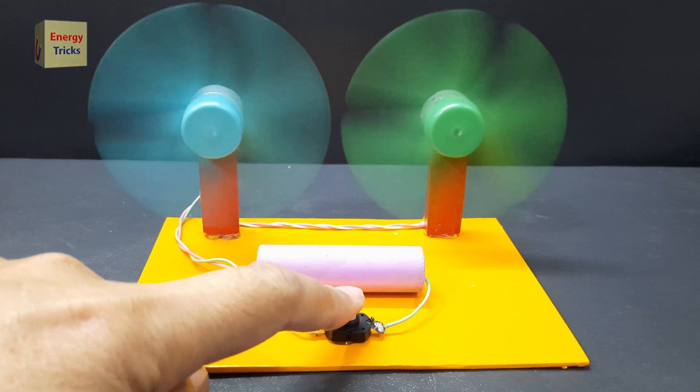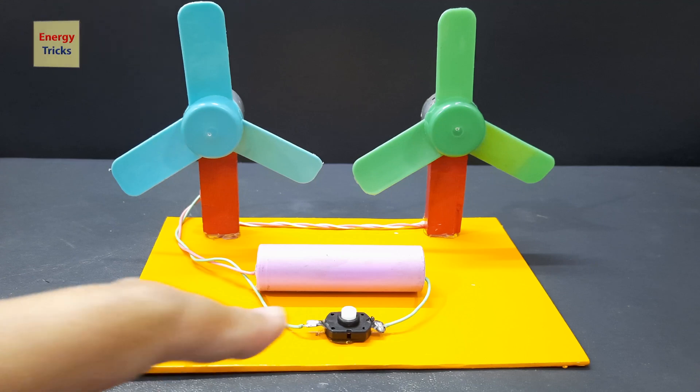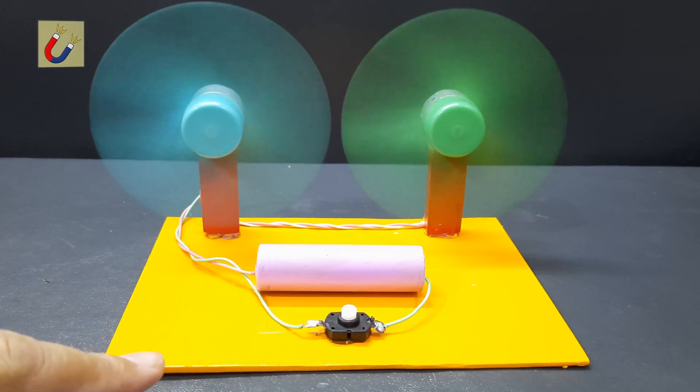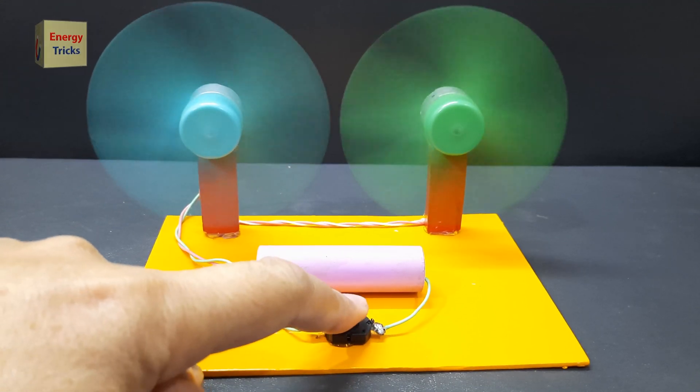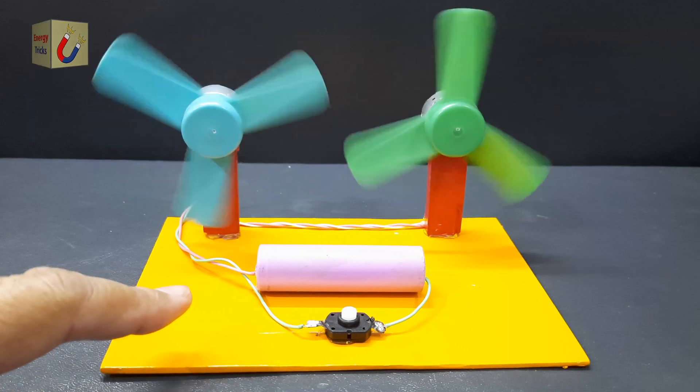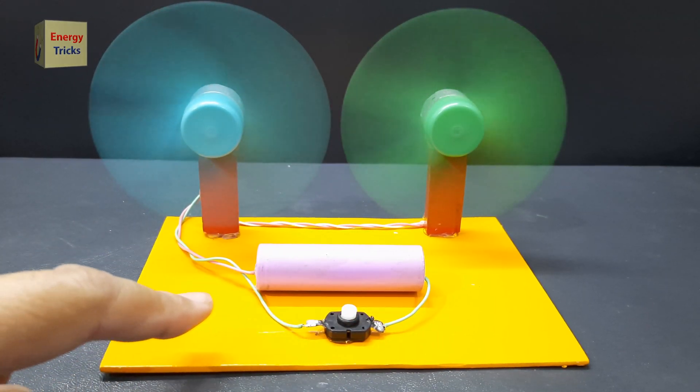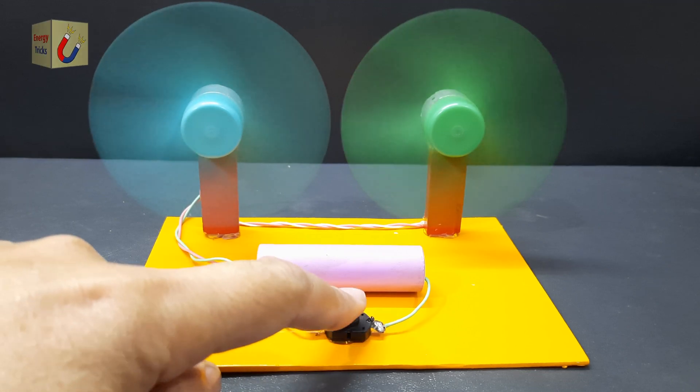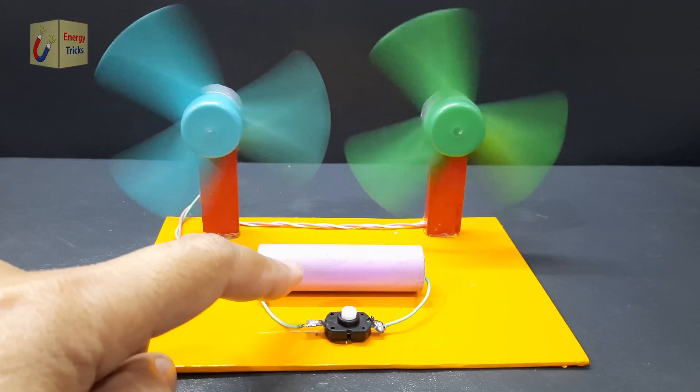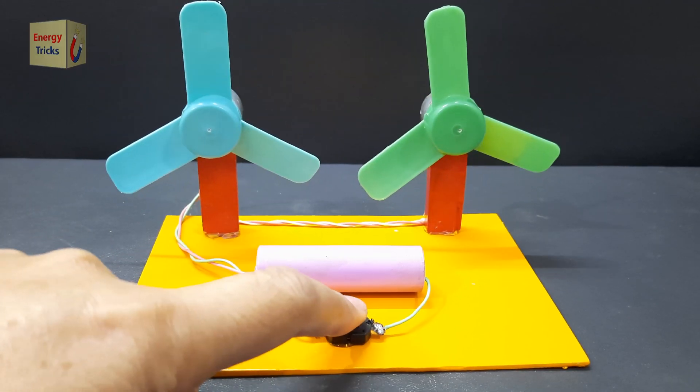The project focused on creating a dual fan setup using two mini DC motors that could spin two separate fan blades simultaneously. By using the 18650 battery, I aimed to design a fan system that would be lightweight, energy-efficient, and easy to use in small spaces, such as desks or workstations, without relying on external power sources.